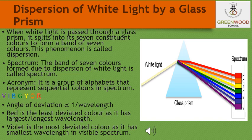What you will observe, students? You will find a beautiful band of colors, because the prism splits the white light that is incident on it and a band of colors is obtained. As you can see in the figure, the blue light bends the most and the red light bends the least. When white light is passed through a glass prism, it splits into its seven constituent colors to form a band of seven colors. This phenomenon is known as dispersion.